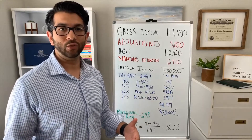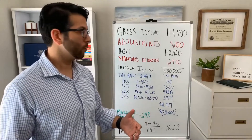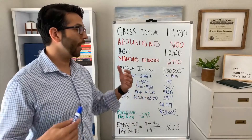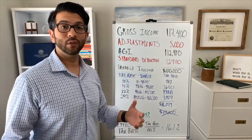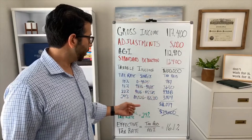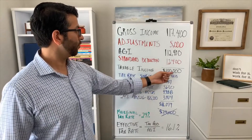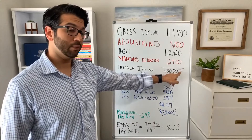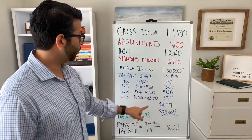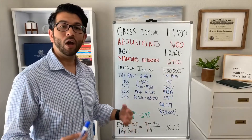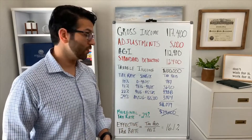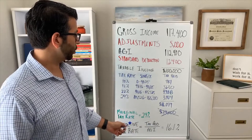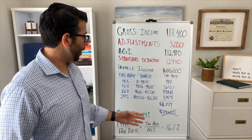Another question I get is: what is a marginal tax rate? The marginal tax rate simply means — what rate was the last dollar of taxable income taxed at? So in this example, if this individual had one more dollar of taxable income, they would pay 24% tax on that dollar, or 24 cents. The marginal tax rate is the rate at which the last dollar you earn is taxed.